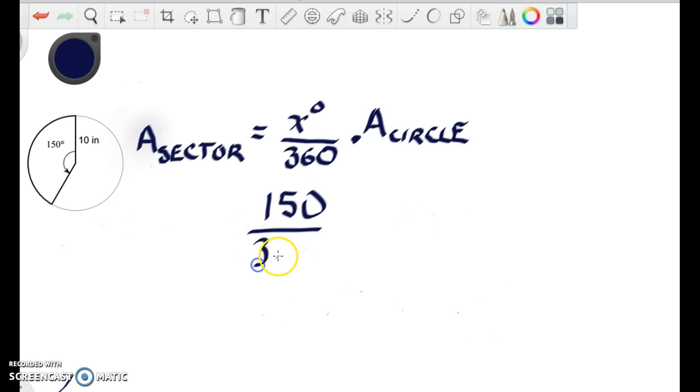and the area of the circle, pi r squared, gives you the area of the circle, so we're going to multiply that by pi 10 squared, and that gives us 100 pi,